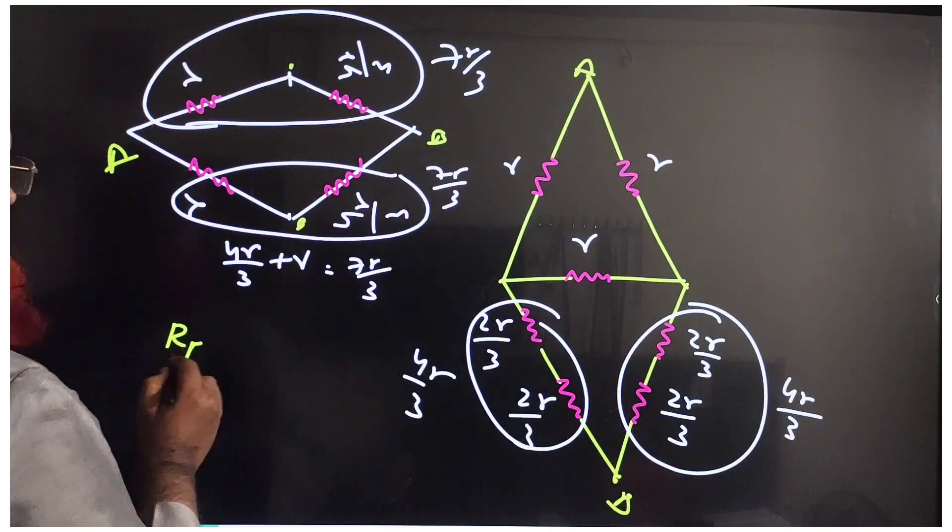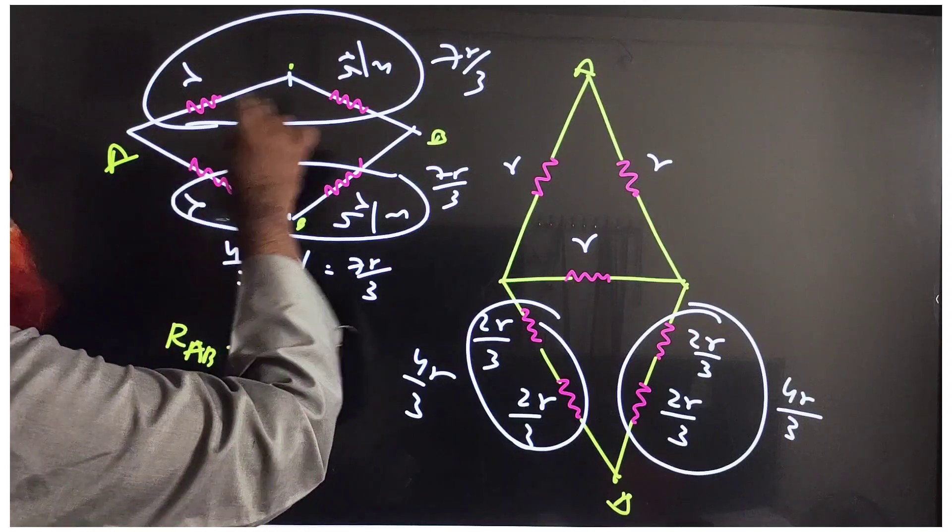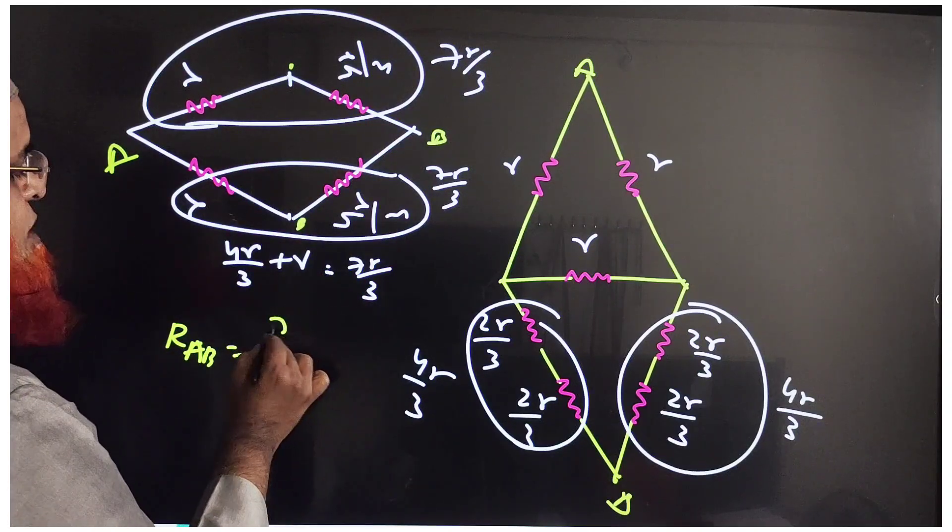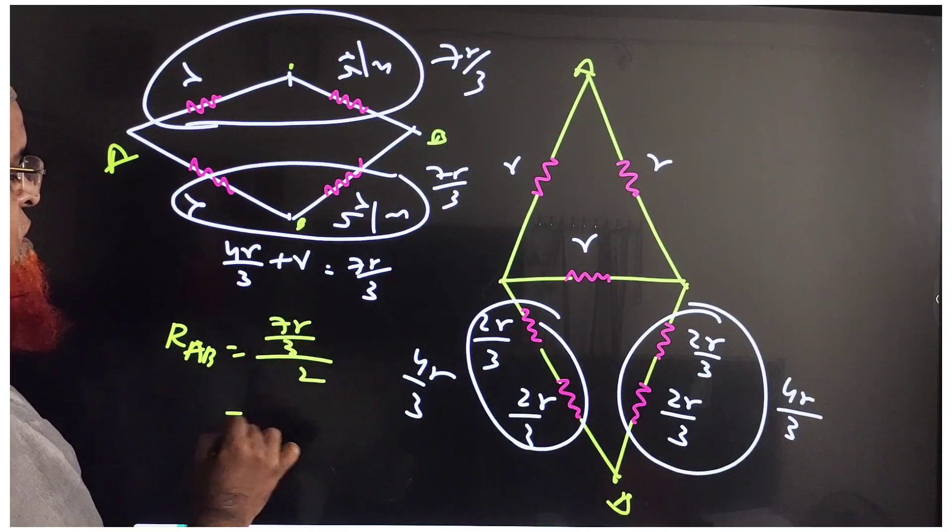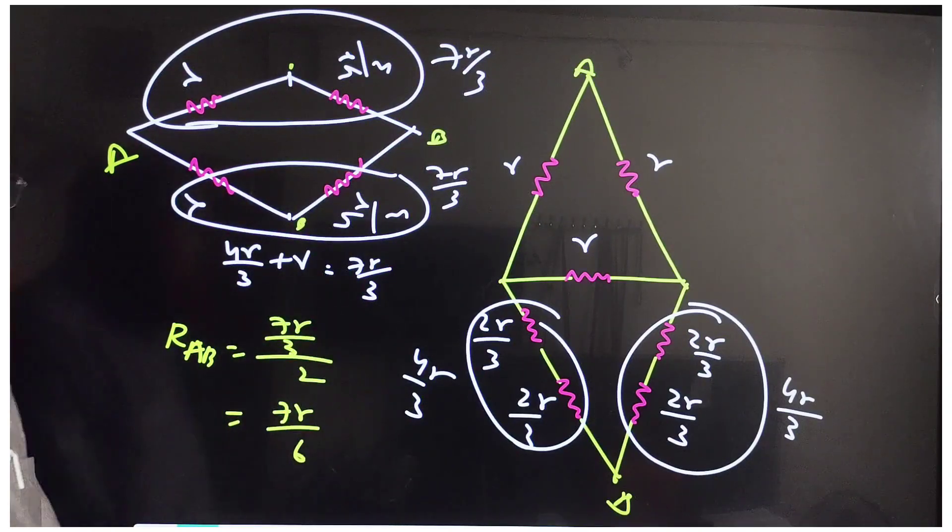Resistance across AB is going to be r1 times r2 divided by r1 plus r2, that is 7r by 3 divided by 2, which is nothing but 7r by 6. That's the answer. That's it.